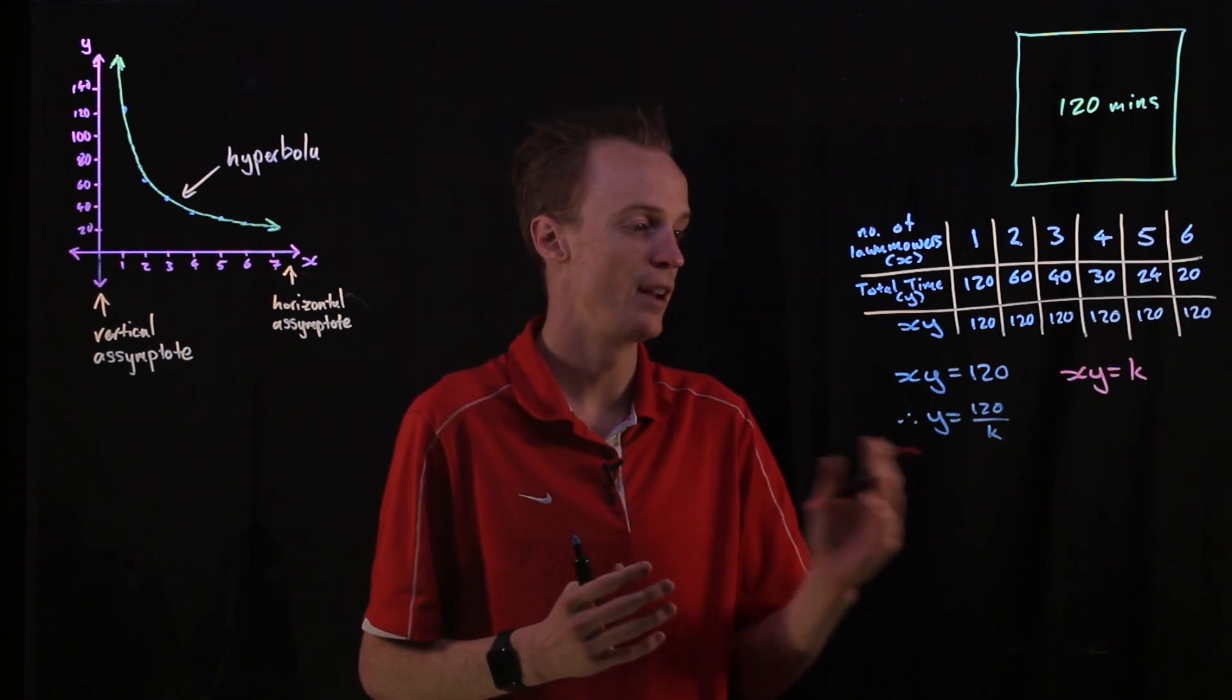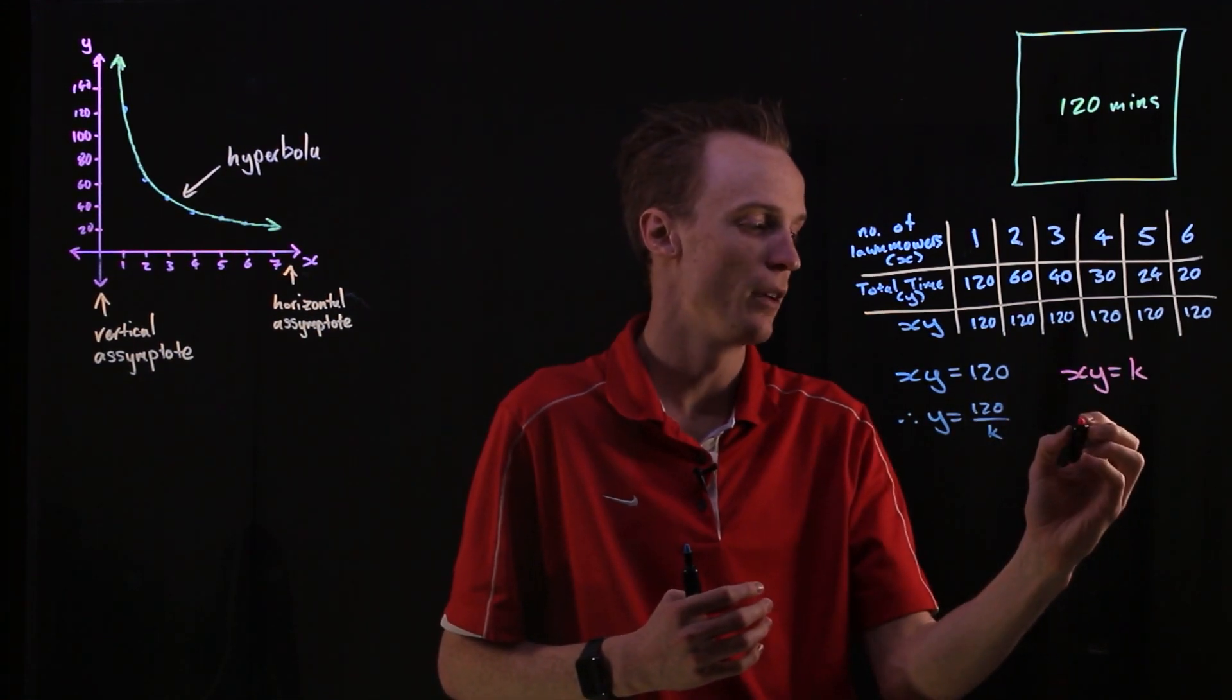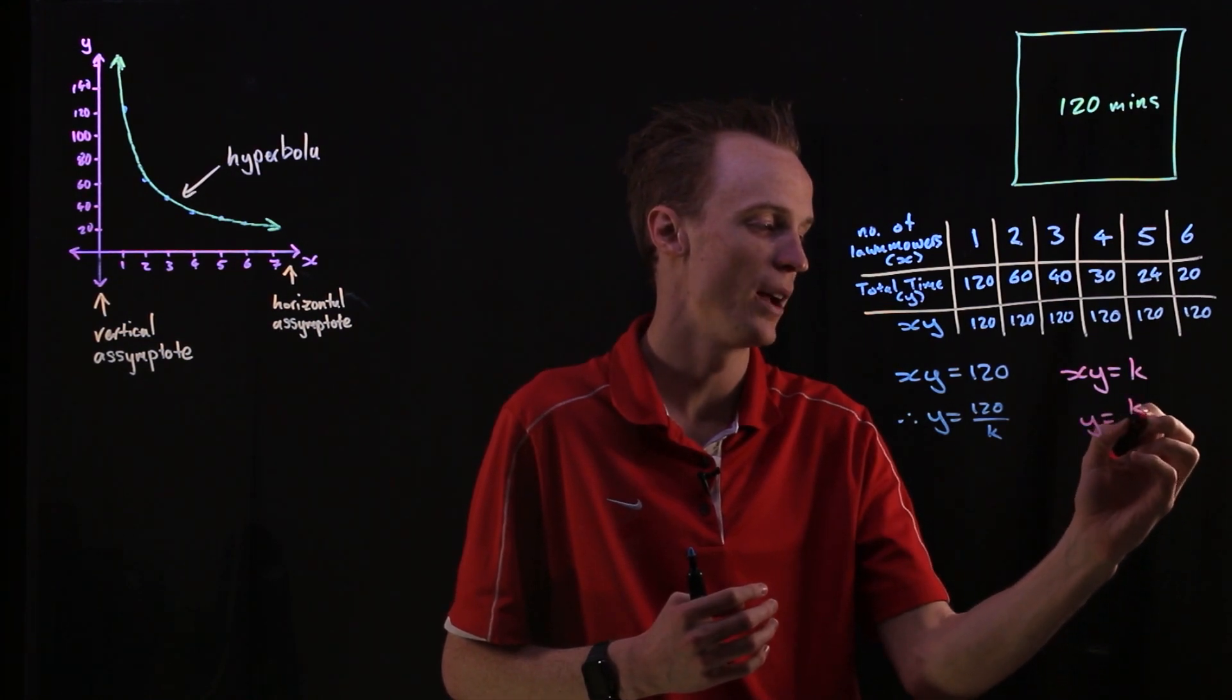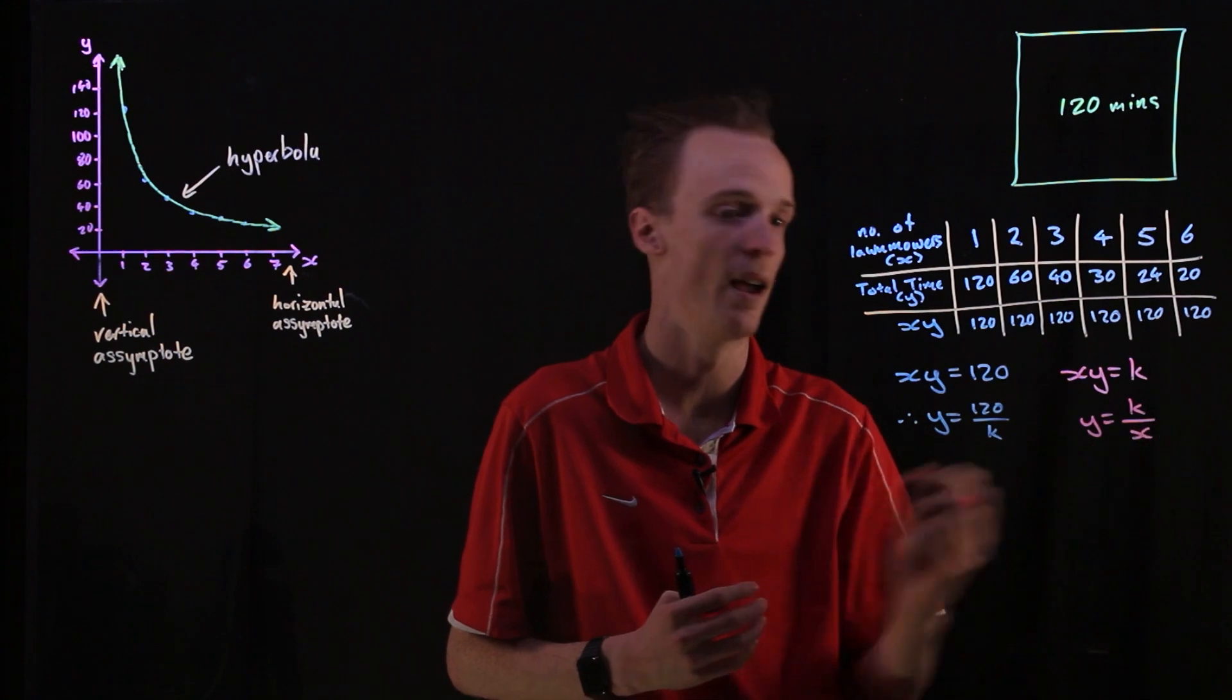Now, if we were to rearrange this in terms of y equals, we need to divide both sides by x. So our y is equal to our k value divided by our x.